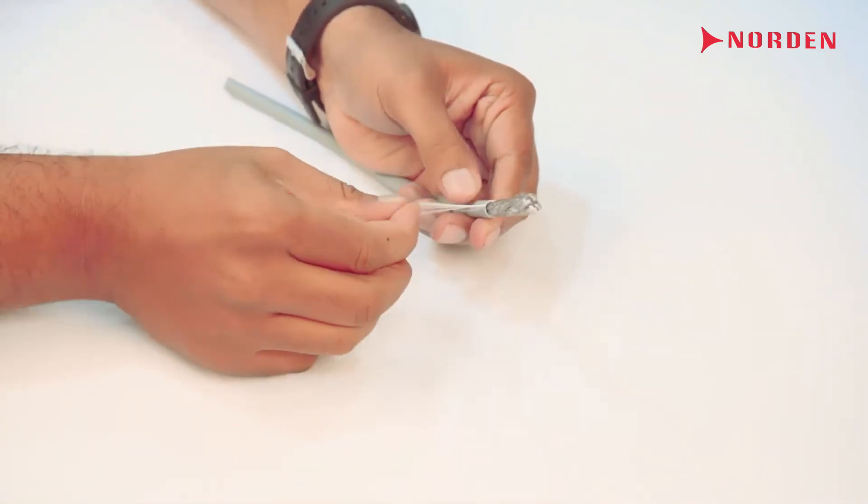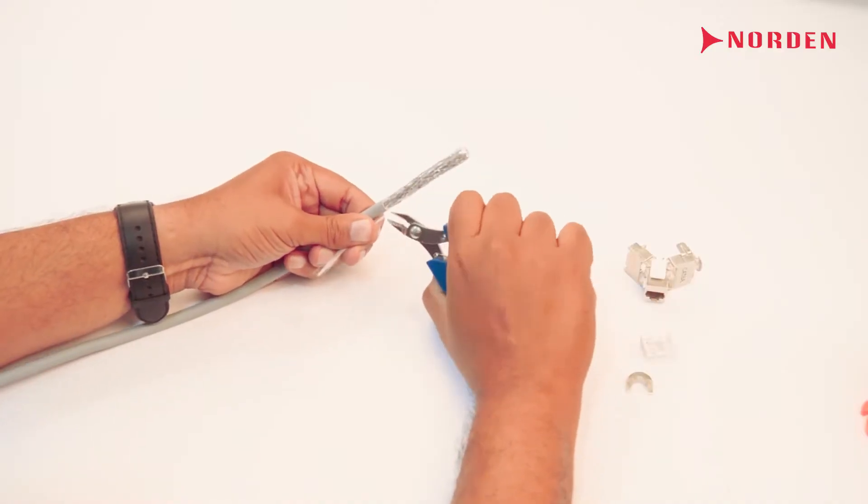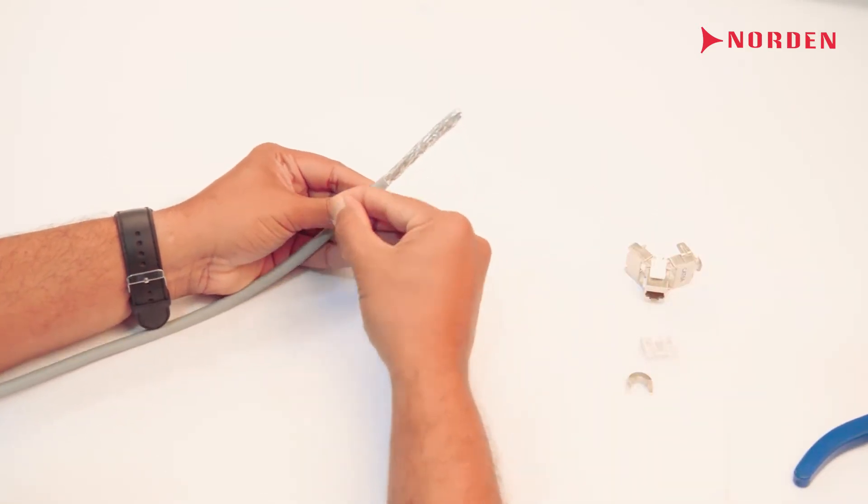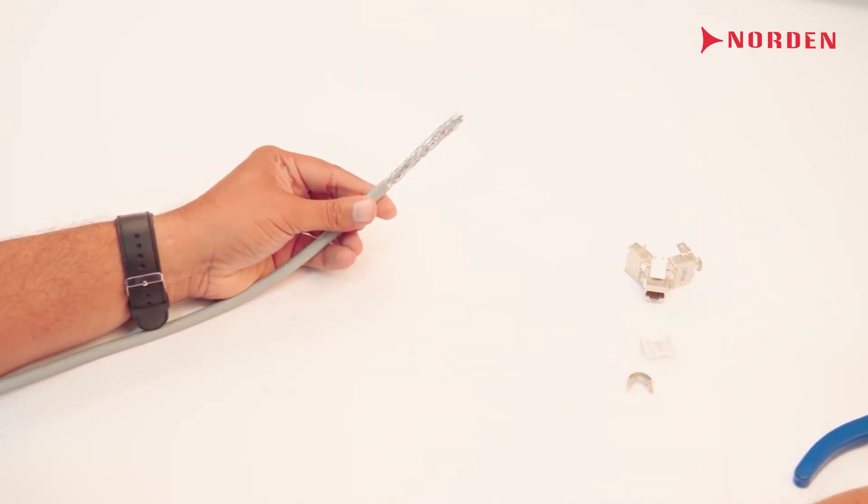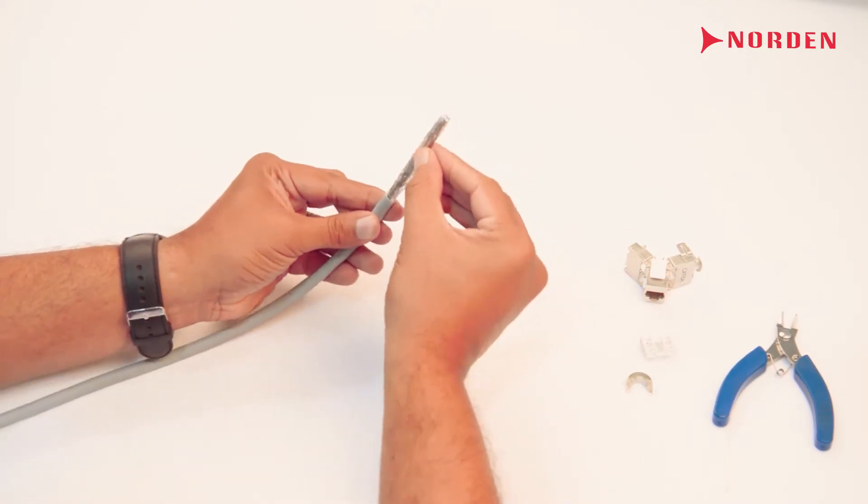Cut the ripcord using your cable cutters and then pull down the braid shielding wire like this.